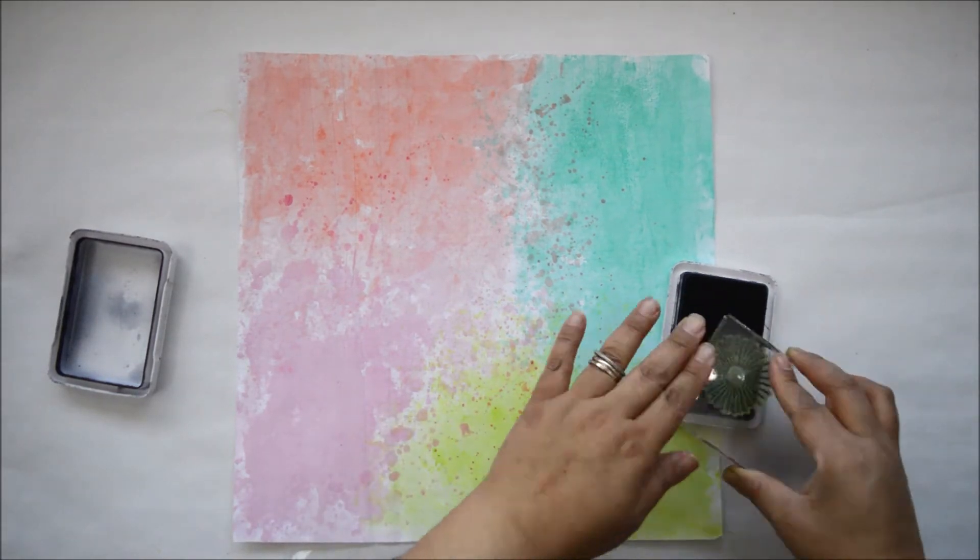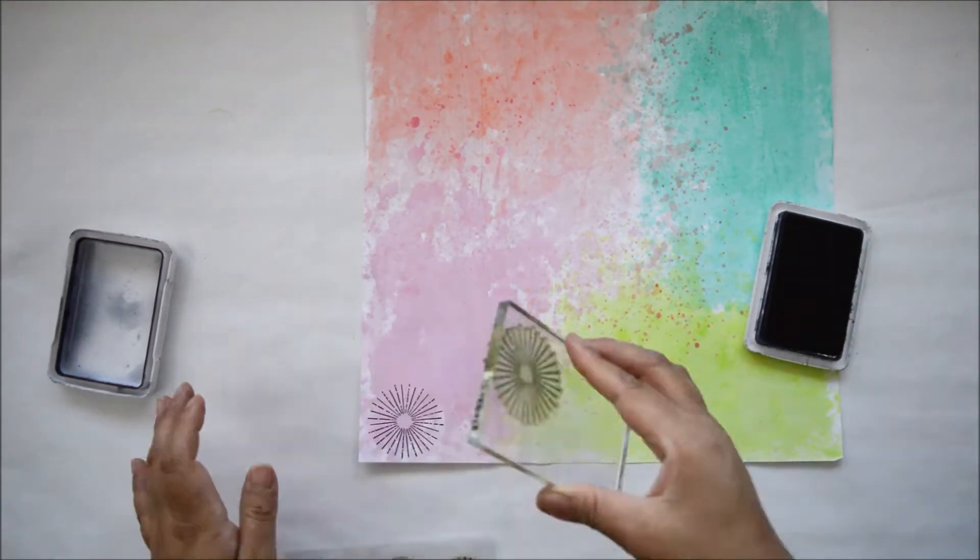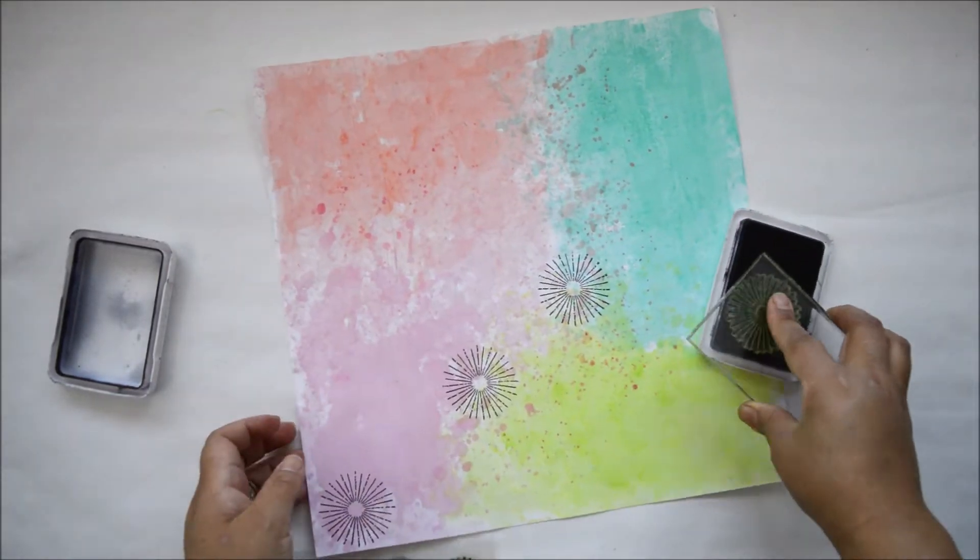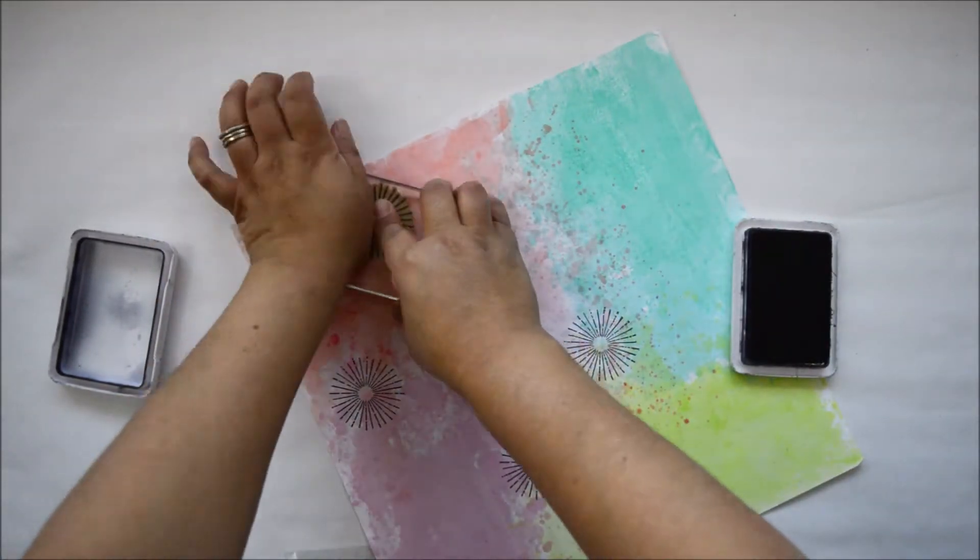It doesn't take that long to dry but because I didn't gesso the background, I didn't prime it, it did buckle. So my choice was once it was dry I ran it through a laminator and that actually helps with reducing the amount of buckle.